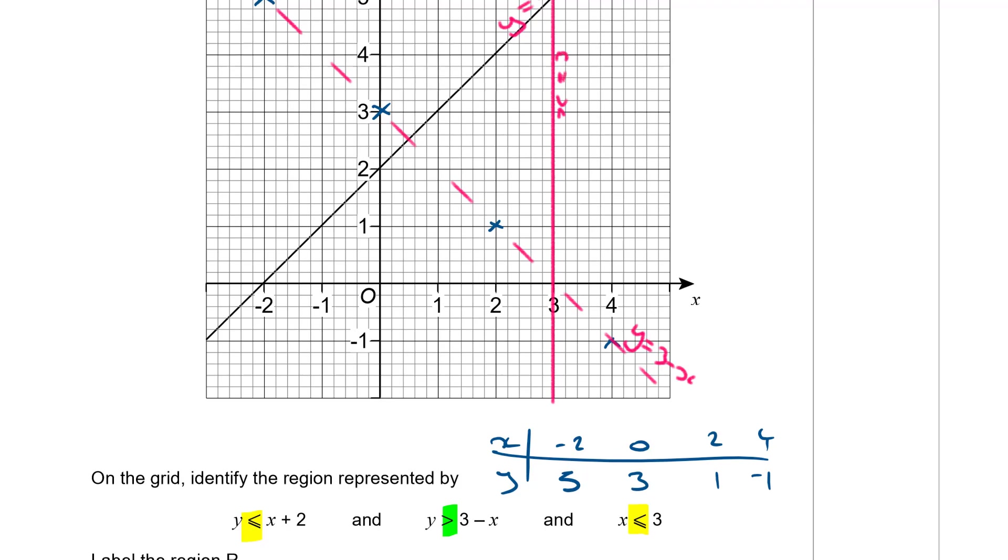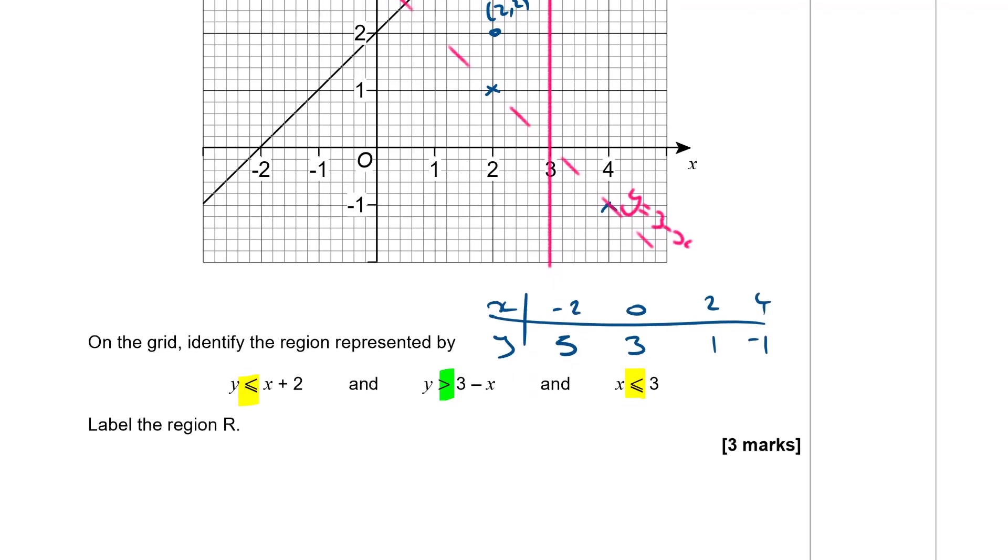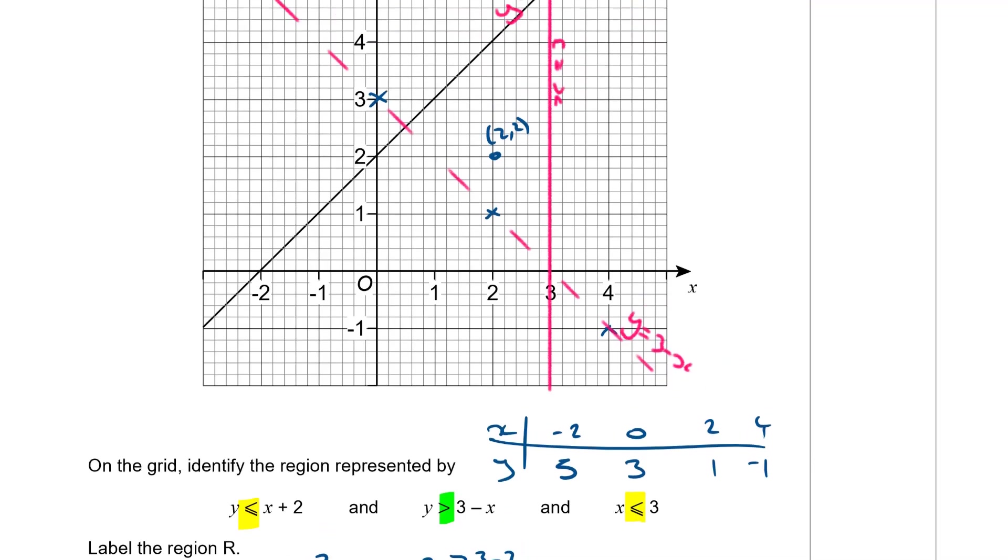So which region is it going to be? Now probably it's going to be the one that encloses all three. So let's pick a point and test it. Let's just pick that one there. So that is the point 2, 2. What we're going to do is going to try that point in each of our inequalities to see if it holds. So for 2, 2, Y is less than or equal to X plus 2. Is 2 less than or equal to 2 plus 2? Is 2 less than or equal to 4? Yes, it is. That one holds. For the second one, is 2 greater than 3 subtract 2? Is 2 greater than 1? Yes, it is. So that one's also true. And then finally, is 2 less than or equal to 3? Yes, it is. So that means that point meets all three conditions. So it must be the region R. So this point here is going to be the region R.